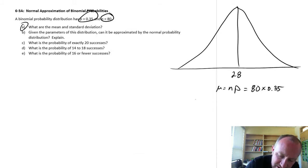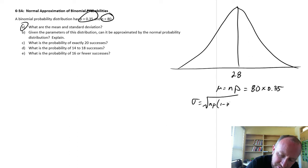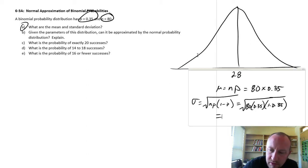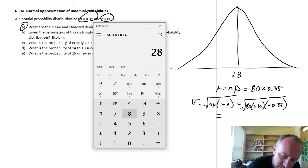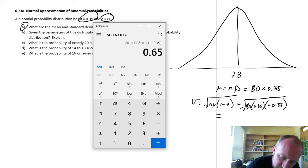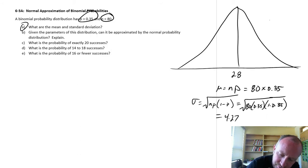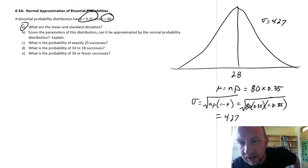And our standard deviation is the square root of n times p times (1 minus p): the square root of 80 times 0.35 times (1 minus 0.35). So now we have the parameters of our normal distribution.